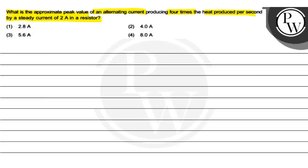So here you need to find the approximate peak value of alternating current produced by a steady current of 2A in a resistance. What do you need to find? I_max. The peak value of alternating current.